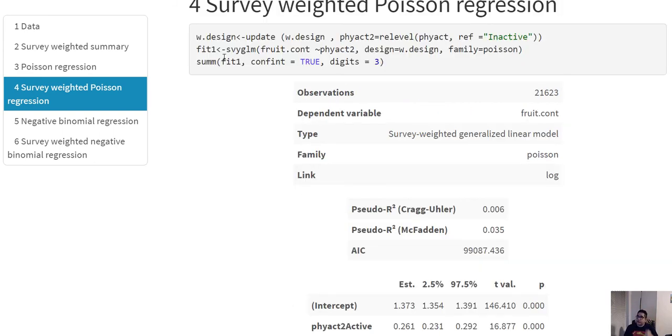So how do you fit the Poisson regression for survey weighted data? We simply have to use the svyglm function from the survey package. Again, you have to specify which is your family, and the family is going to be Poisson, and you can again get the estimates from here by using the sum function.